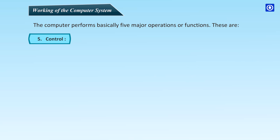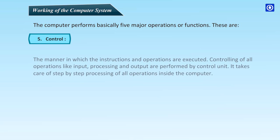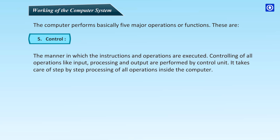Fifth, control. The manner in which the instructions and operations are executed. Controlling of all operations like input, processing, and output are performed by the control unit. It takes care of step-by-step processing of all operations inside the computer.